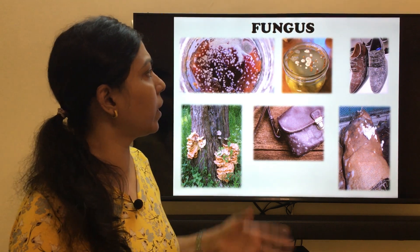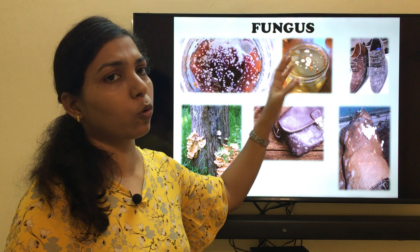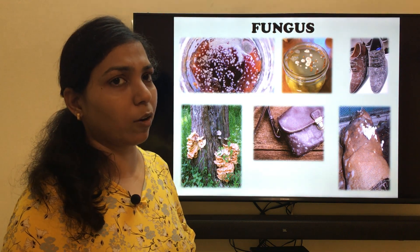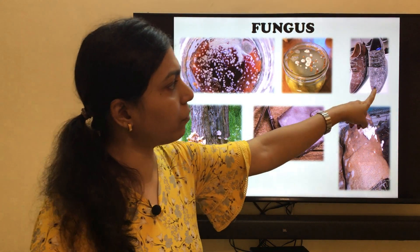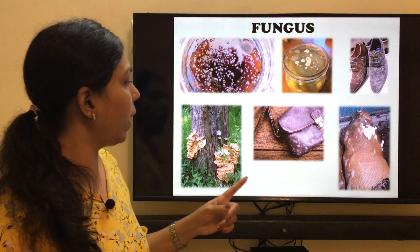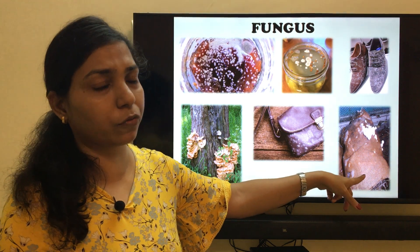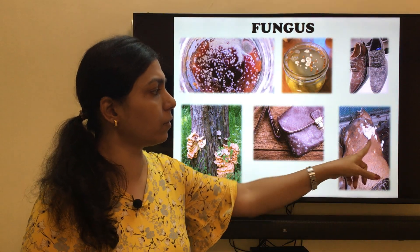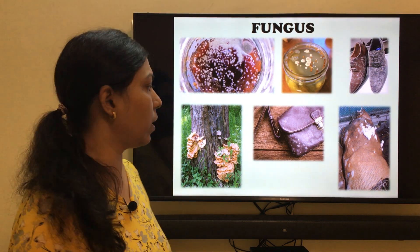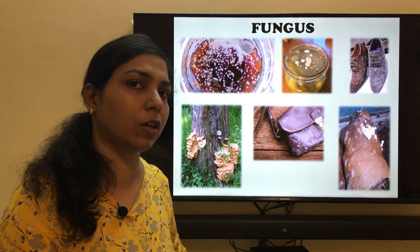If you find any bottles of jams or pickles infected with fungus, it is better to throw away the entire thing because it is already contaminated. During rainy seasons you may also see fungus growing on leather shoes — tiny white patches — or on leather bags, gunny bags, jute bags, leather belts, and even on trees. These are different places where fungus grows, as you may have observed in your day-to-day life.